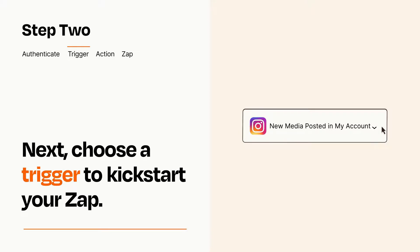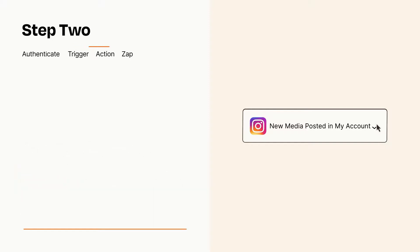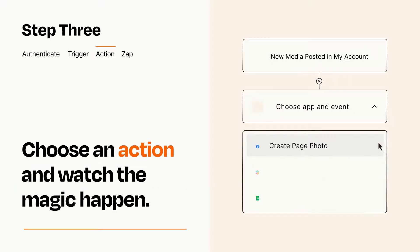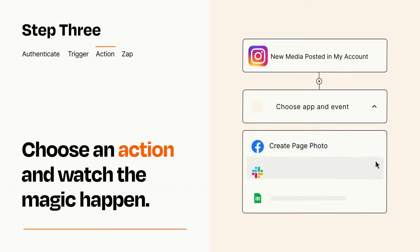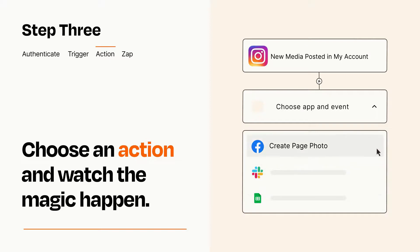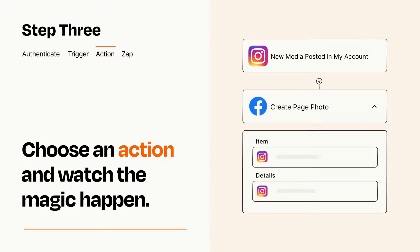This last part is where the magic happens. Choose the action you want to happen in your target app. You'll see a bunch of fields where you can specify the details of your Zap. You can type free form text or pull data in from your trigger step as needed.